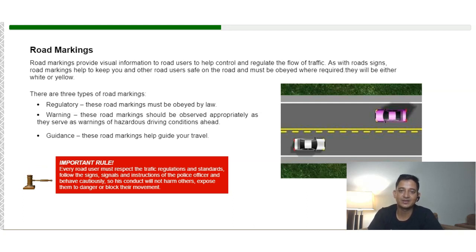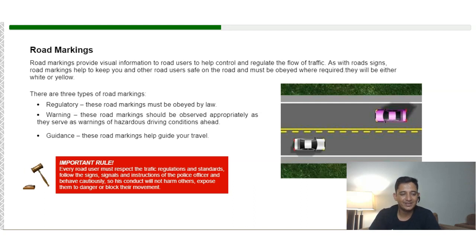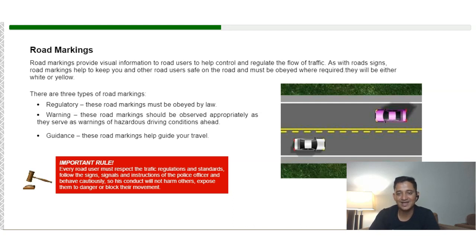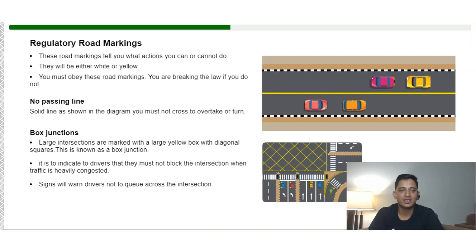Road markings provide visual information to road users to help control and regulate traffic flow. Like road signs, road markings help keep you and other road users safe. They are of three types: regulatory markings, which must be obeyed by law; warning markings, which should be observed appropriately as they warn about upcoming hazards; and guide markings. Regulatory road markings tell you what actions you can or cannot take, and all road users must follow them.